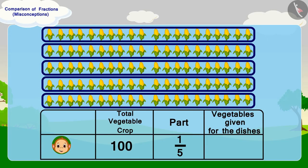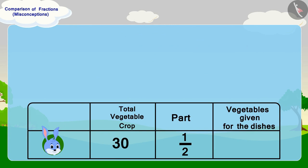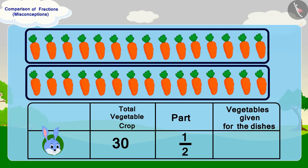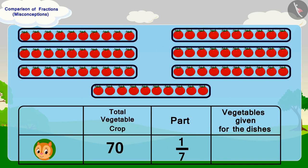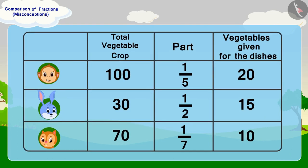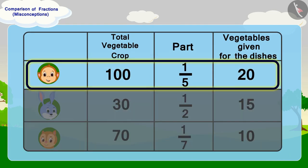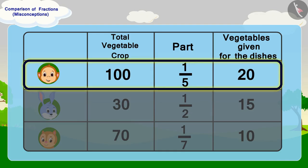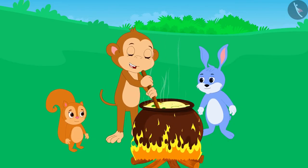Well done children! Babban gave one-fifth of 100, which is 20 vegetables. Bunny gave half of 30, which is 15 vegetables. And Chanda gave one-seventh of 70, which is 10 vegetables. Babban has said the right thing — he has given the most vegetables for the dish, therefore he should get the largest part.